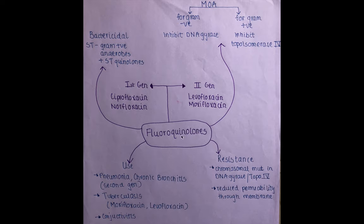Resistance to fluoroquinolones can develop either via chromosomal mutation in DNA gyrase or topoisomerase 4, or through reduced permeability through the membrane — that is, allowing less drug to enter.